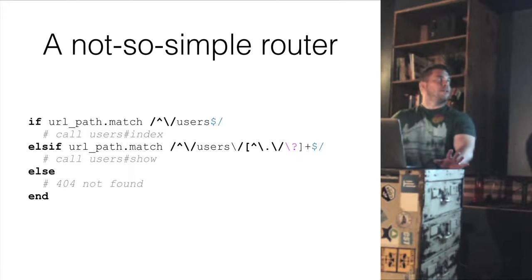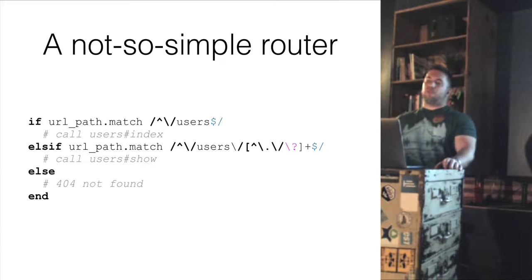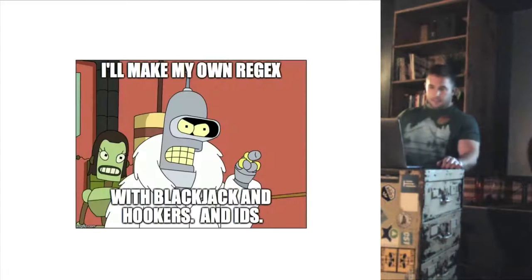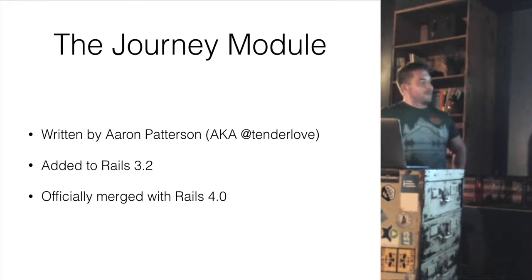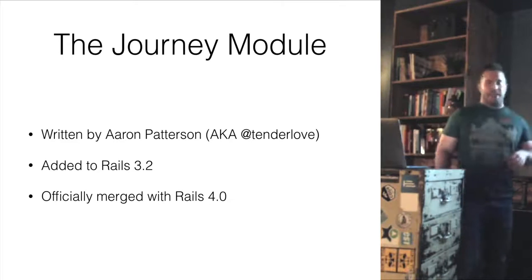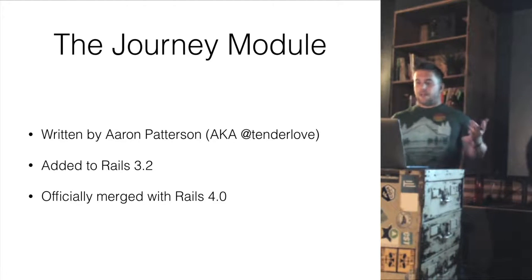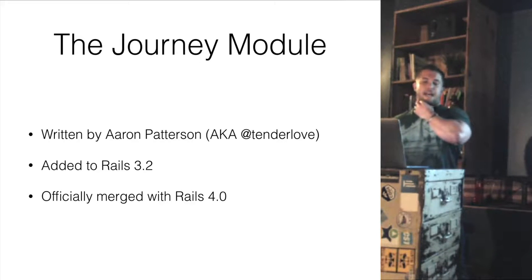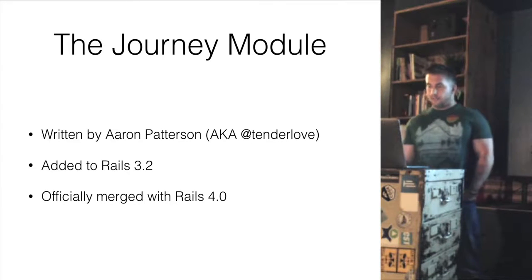But what if you could make your own regular expression engine that was specifically designed to only parse URLs, and collect useful information about those URLs as it did it? That would be pretty cool. And it turns out that's exactly what the Journey module in the Rails router does. The Journey module was written by Aaron Patterson — also known as tenderlove — who's a Ruby core contributor and has done a lot of work on Rails. It was added originally in Rails 3.2, officially merged with Rails 4.0, and has been the routing solution ever since.